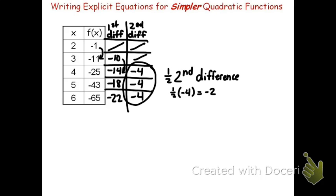This tells me that my function will take the form of f of x equals negative 2x squared. However, if I try substituting any of the numbers for x, I'll see that my equation right now does not work. For instance, if we substitute 2 in, we will not get negative 1. 2 squared is 4, times negative 2 is negative 8. I need to add something at the end.